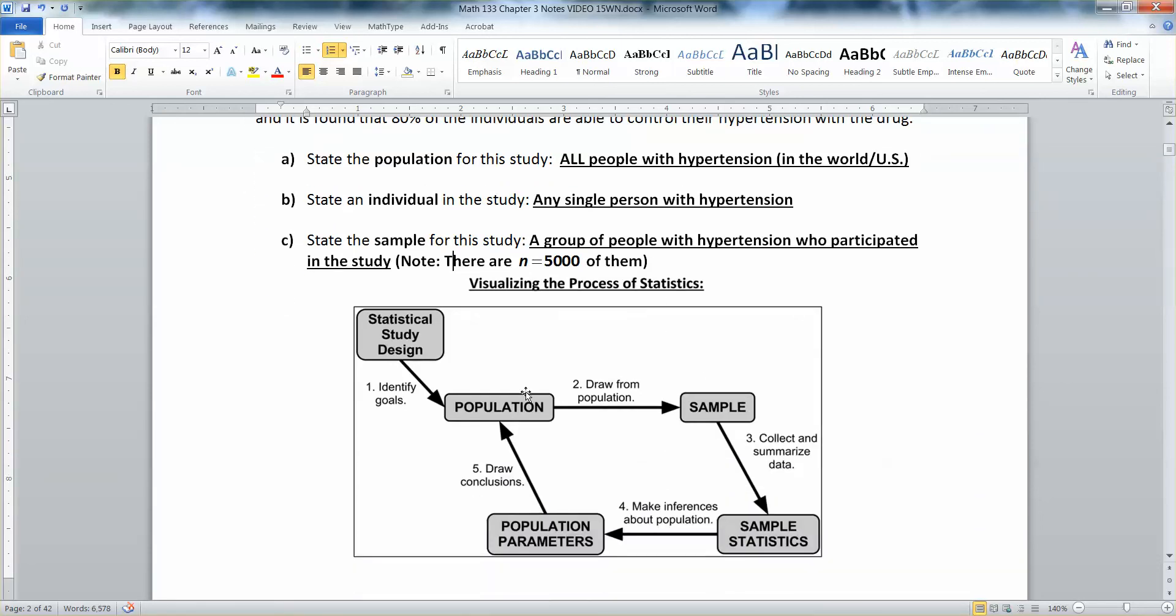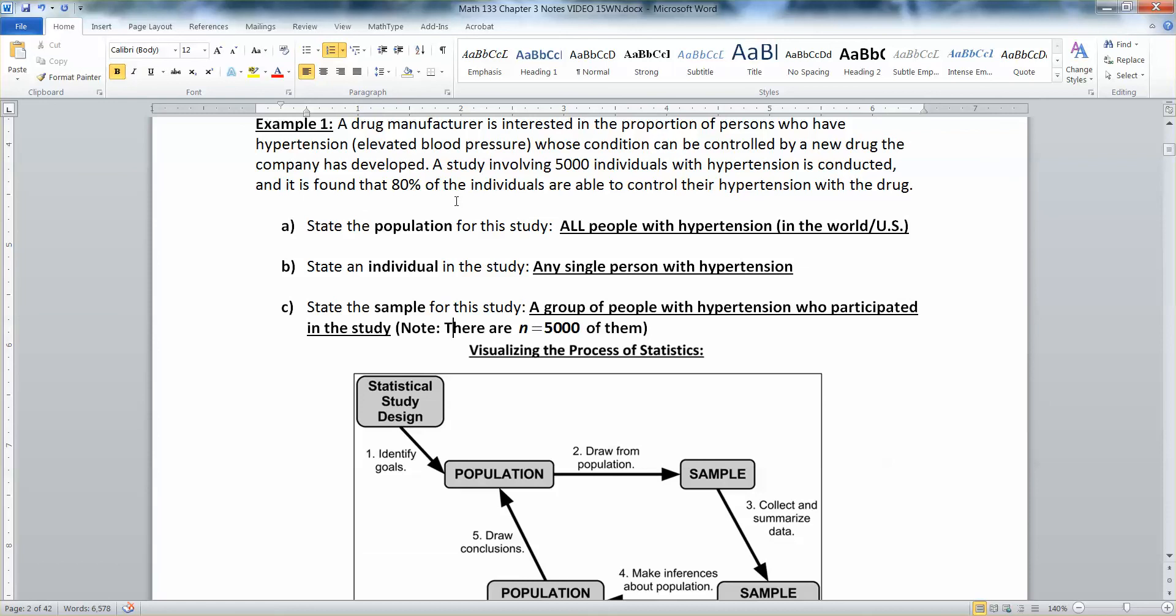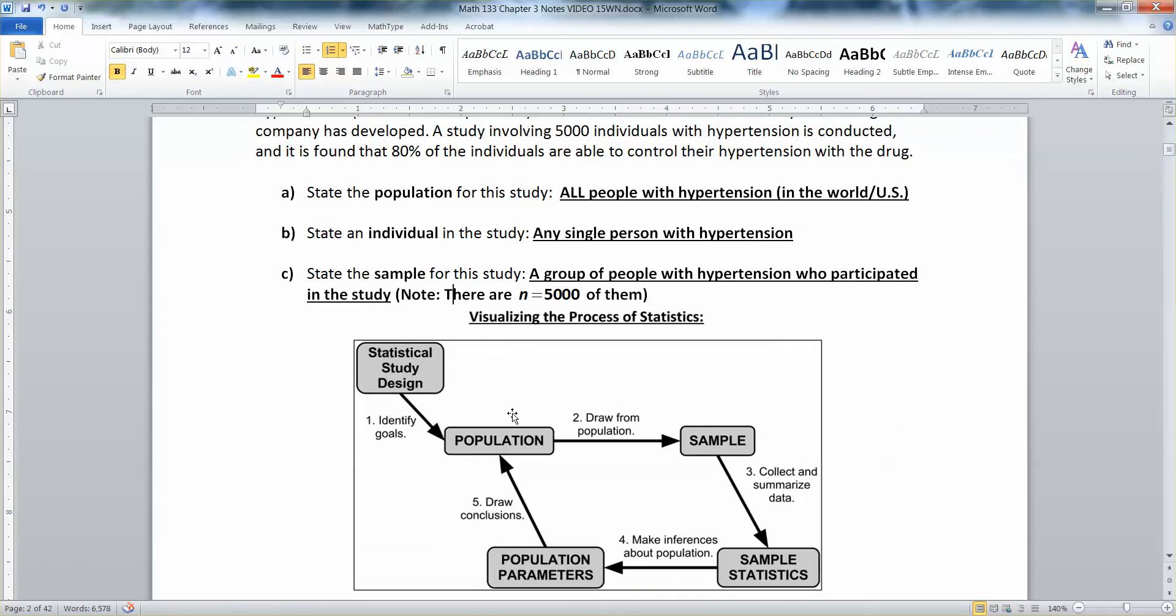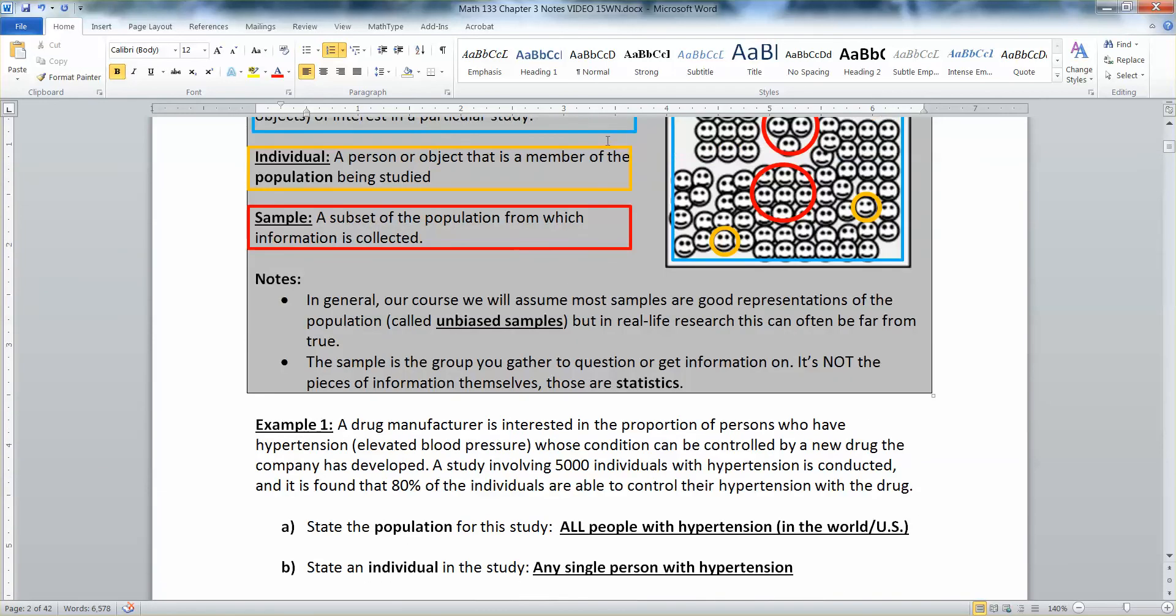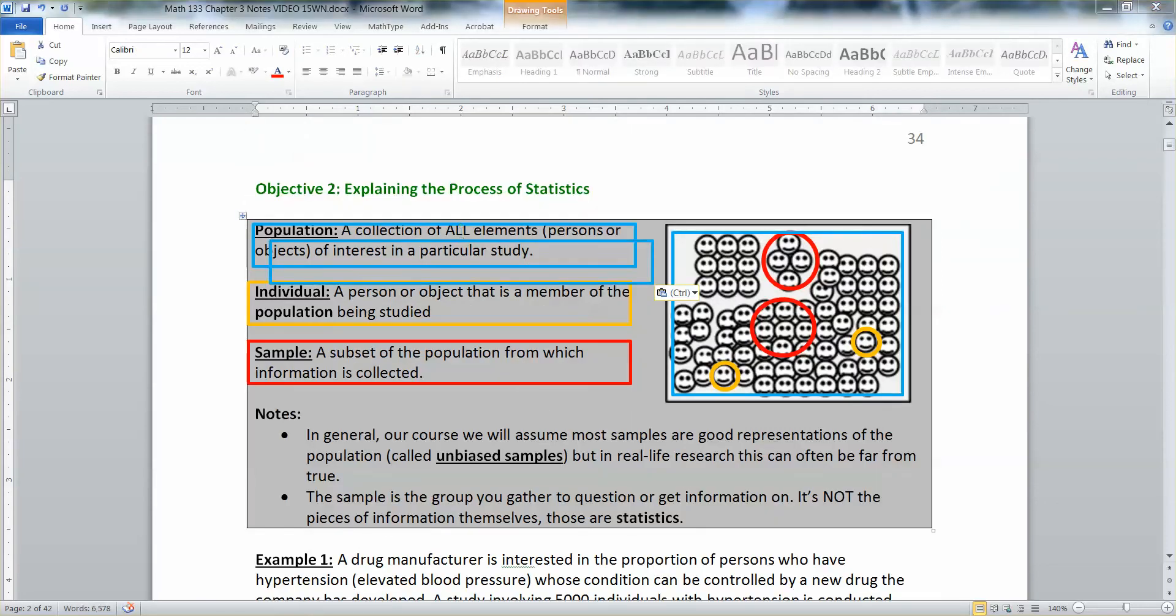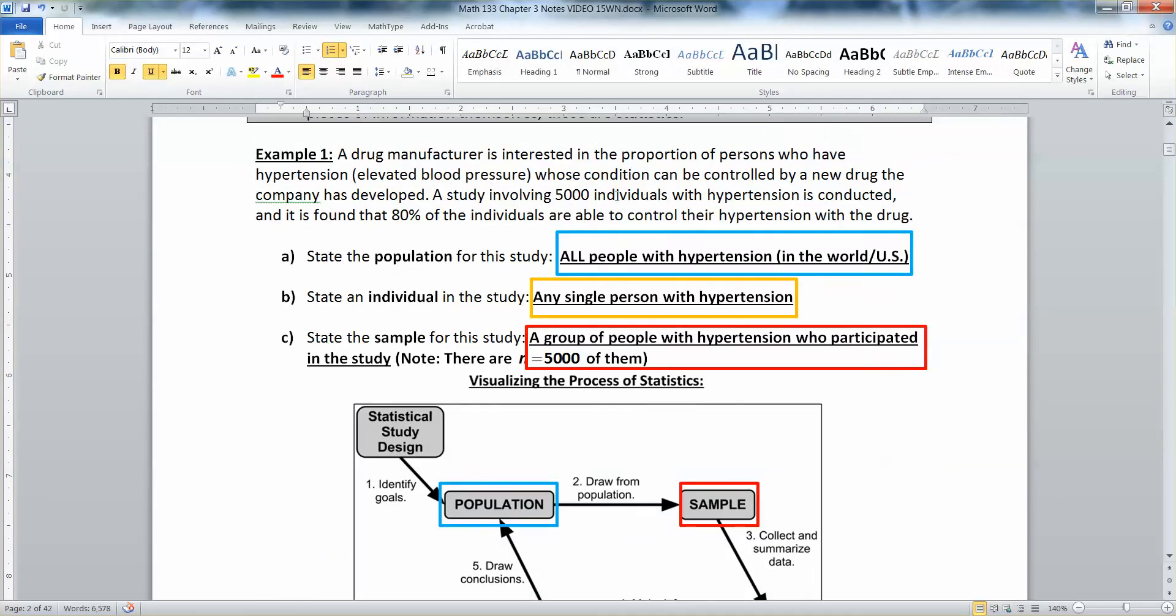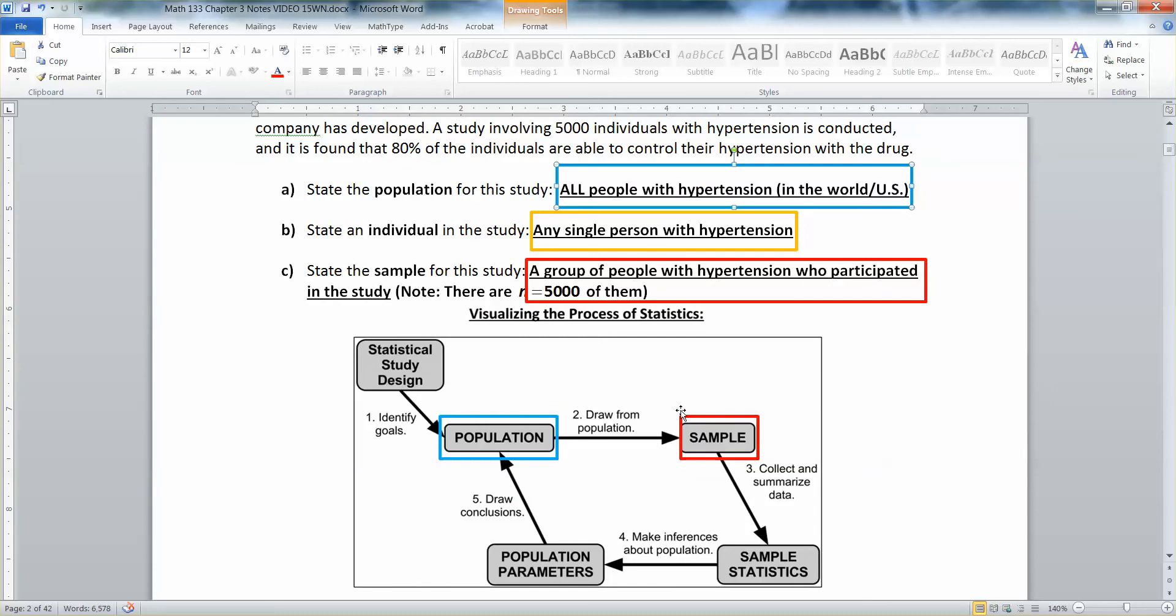Let's think about what they're doing here. They have a population. That's all the people with, well, let me back up before they even get that far, they'll want to design the study. So they'll say, what do we want to figure out? We want to figure out whether this new drug is going to lower hypertension or help people control their hypertension. So we have a population that's all the people with hypertension. So that would be the blue box. And I even highlighted the ones above to keep it clear. So the blue part's the population made up of a whole bunch of individuals.